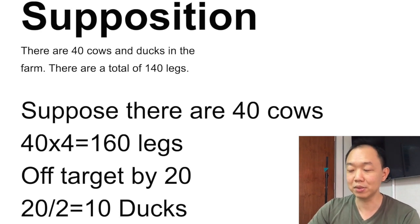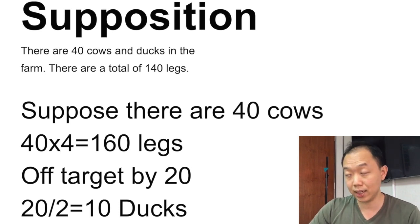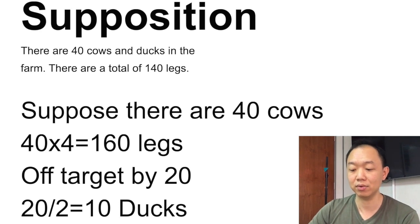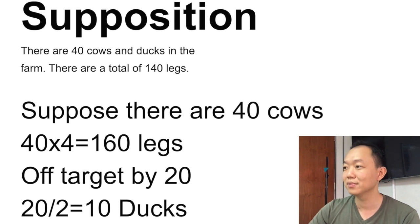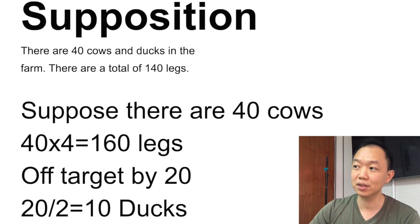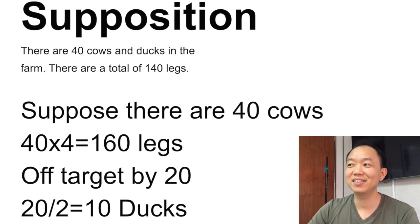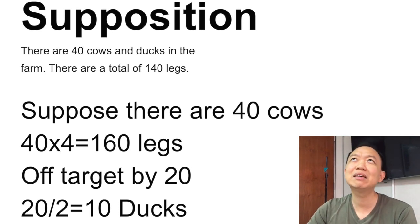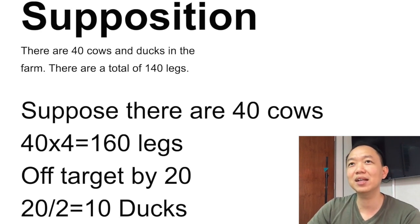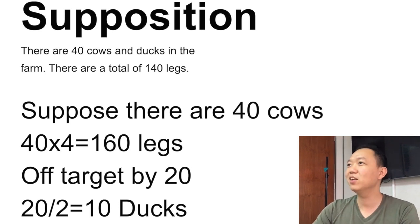You can double-check: 10 ducks times 2 legs is 20 legs, and 30 cows times 4 legs is 120 legs. 120 plus 20 equals 140 — correct! Another way to do this question is guess and check — you still get marks. If you can't figure out supposition, guess and check is okay too.